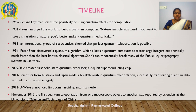Richard Feynman stated the possibility of using quantum effects for computation in 1959 and urged the world to build a quantum computer in 1981. An international group of six scientists showed that perfect quantum teleportation is possible in 1993. In 1994, Peter Shor discovered a quantum algorithm. In 2009, Yale created the first solid-state quantum processor, a two-qubit superconducting chip. In 2011, scientists from Australia and Japan made a breakthrough in quantum teleportation, successfully transferring quantum data with full transmission integrity. D-Wave announced the first commercial quantum annealer, and in November 2012, the first quantum teleportation from one macroscopic object to another was reported.